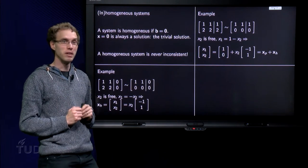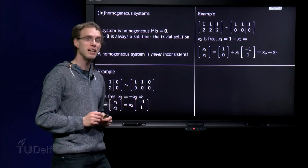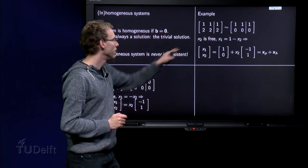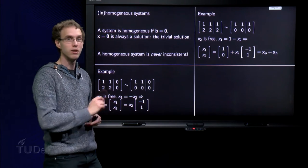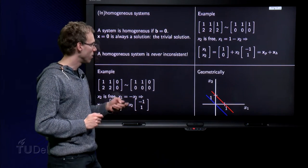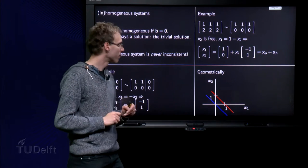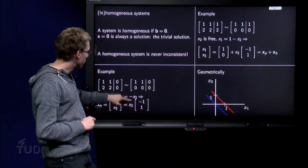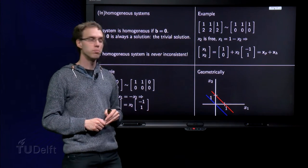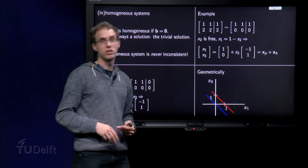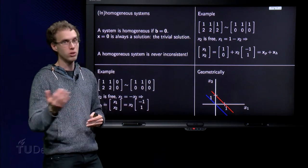And how does this look geometrically? It's always fun to look at that. What's the relation geometrically between homogeneous and inhomogeneous problems? So, here we have the figure. The points satisfying the homogeneous problem are on the blue line, so a line through the origin, of course, zero is a solution.